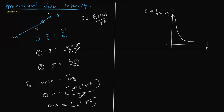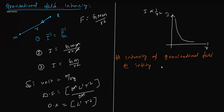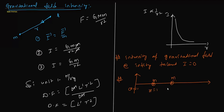Let me write a question to understand this concept. The question asks: intensity of gravitational field at infinity is taken to be zero. A coordinate system is given with identical masses placed at x = 1, x = 2, x = 4, x = 8, and so on. Find the net gravitational field intensity at the origin.